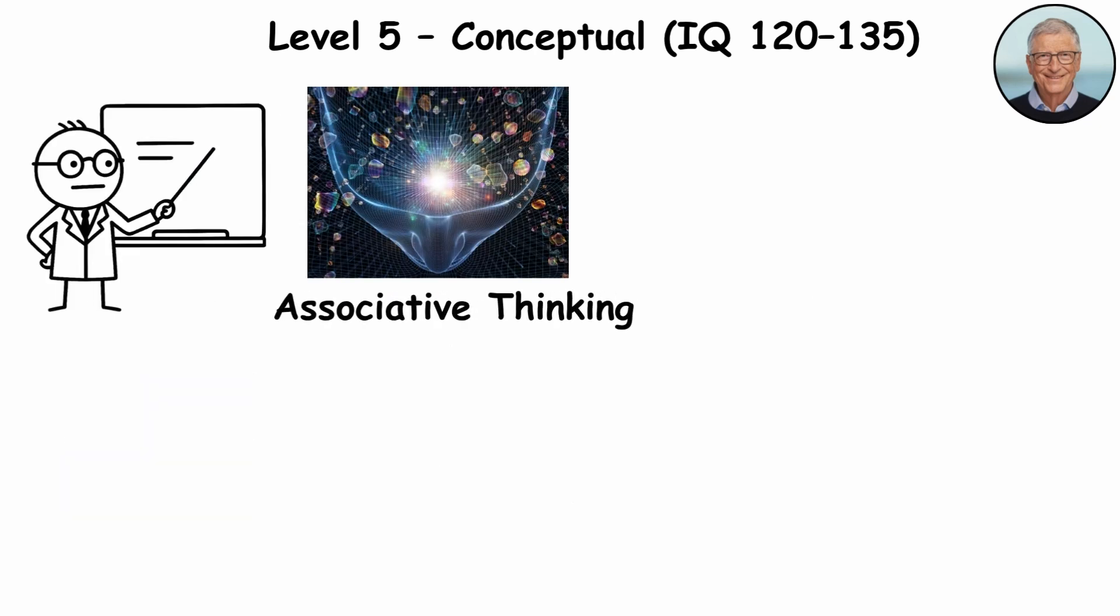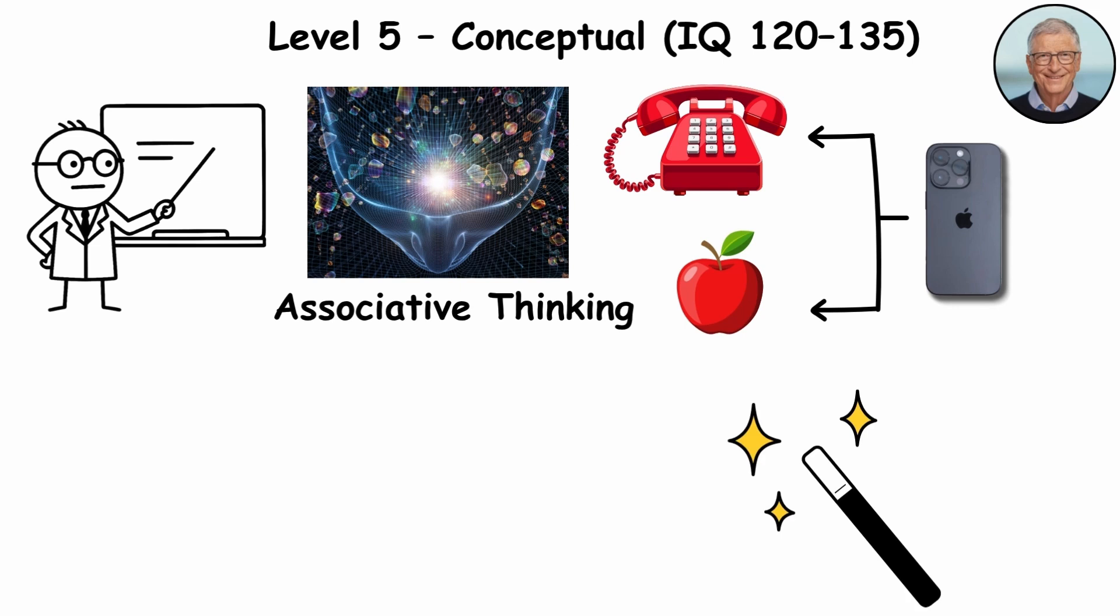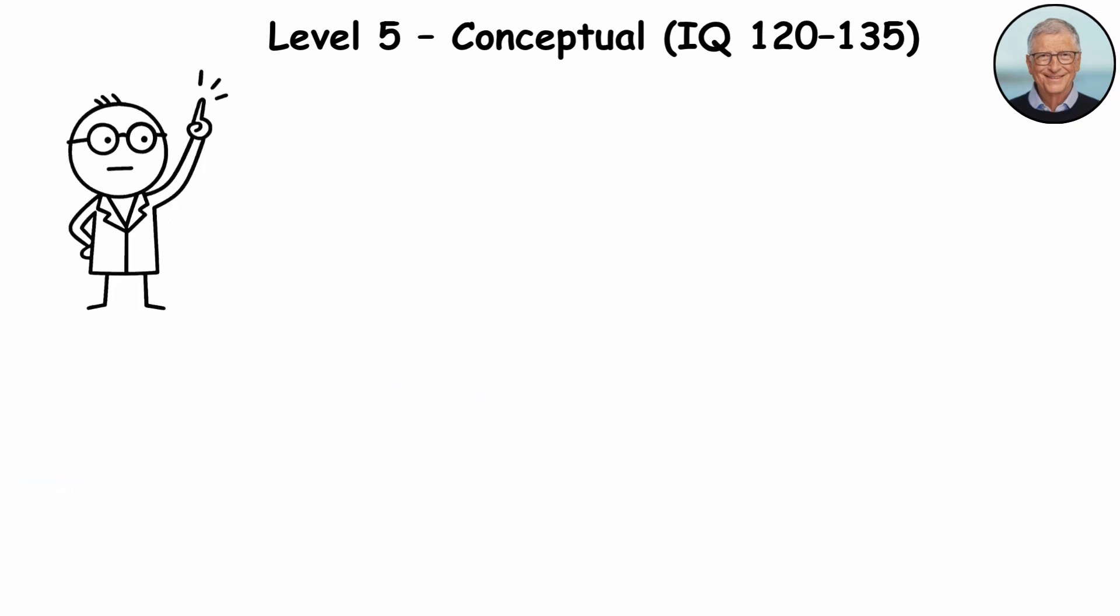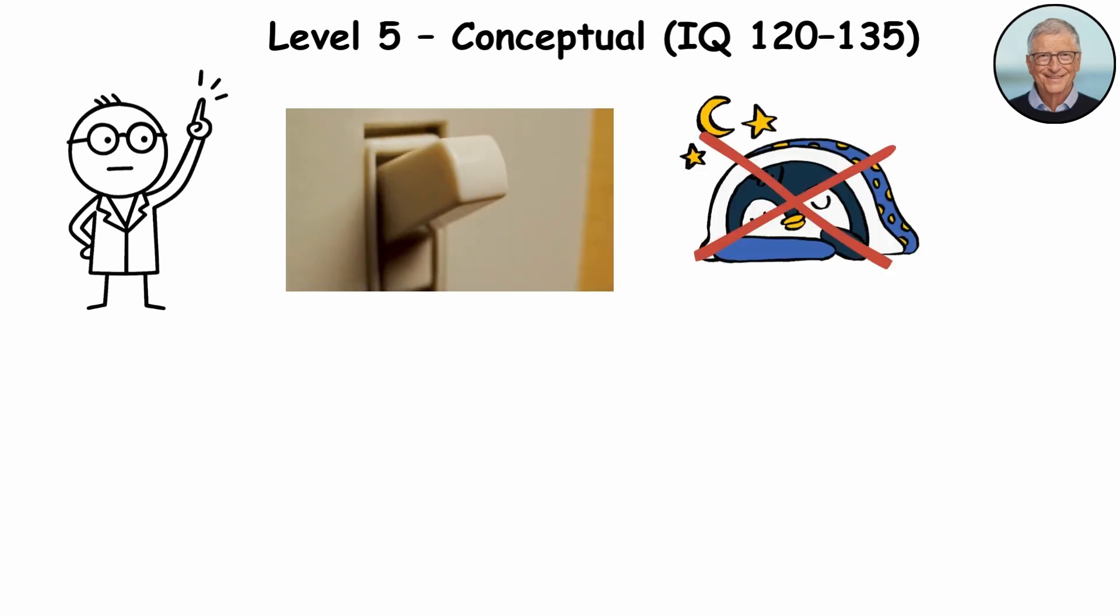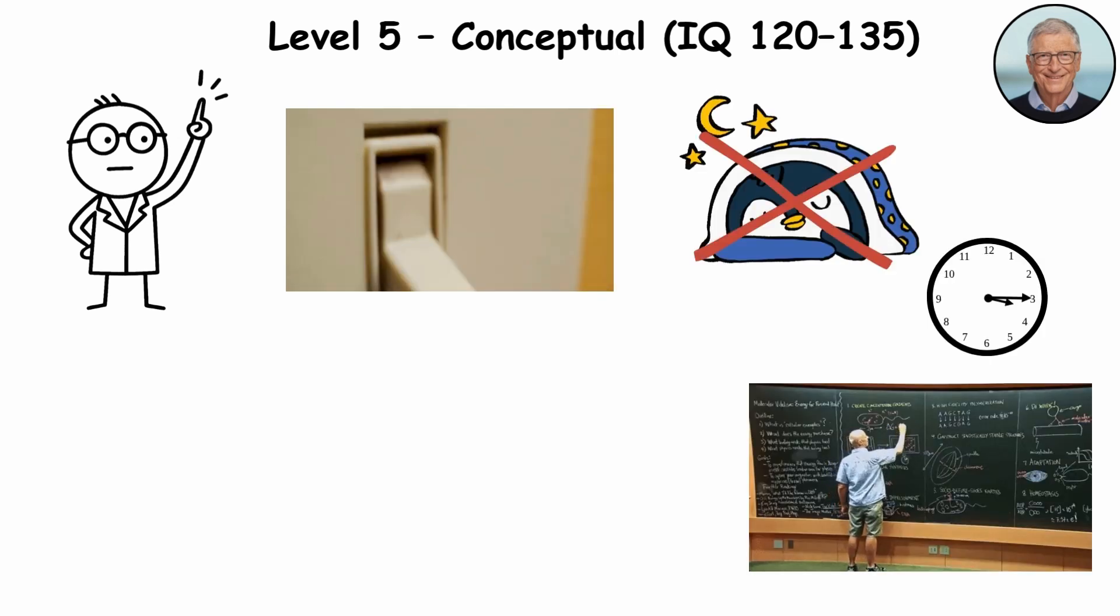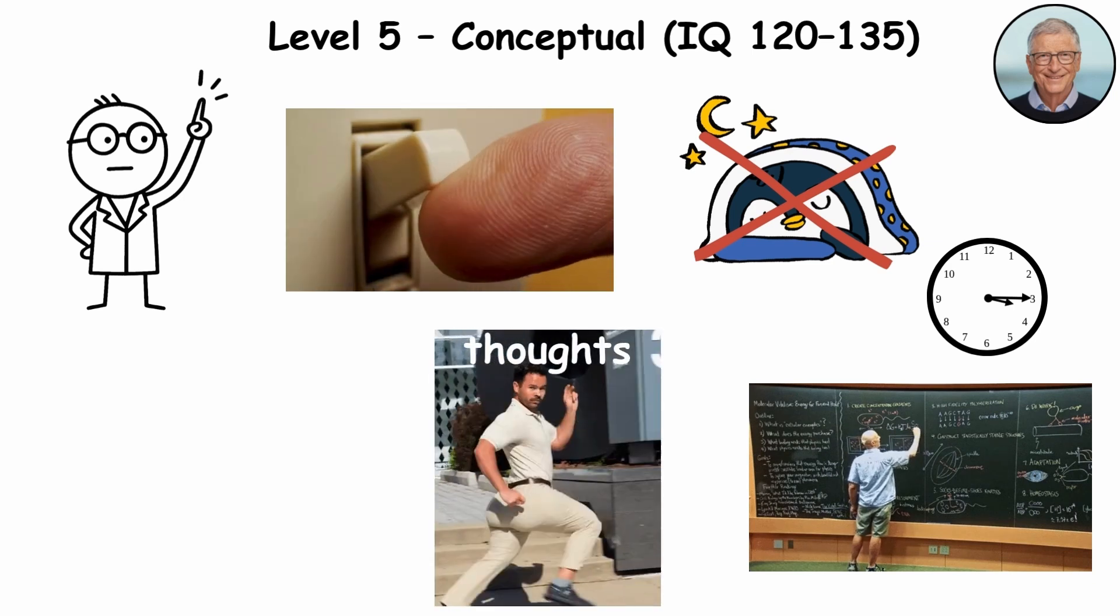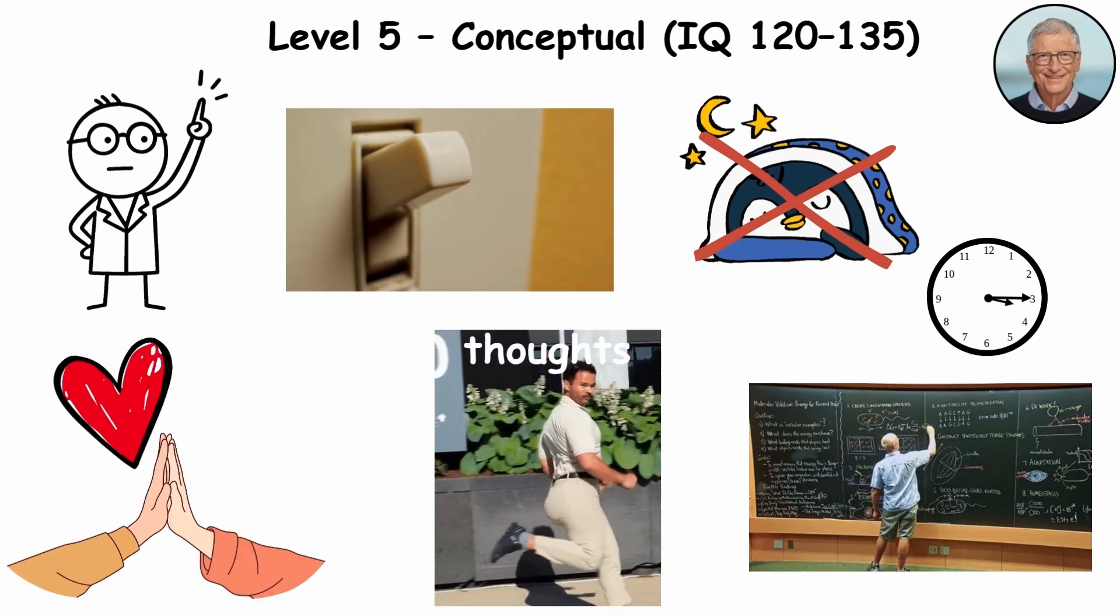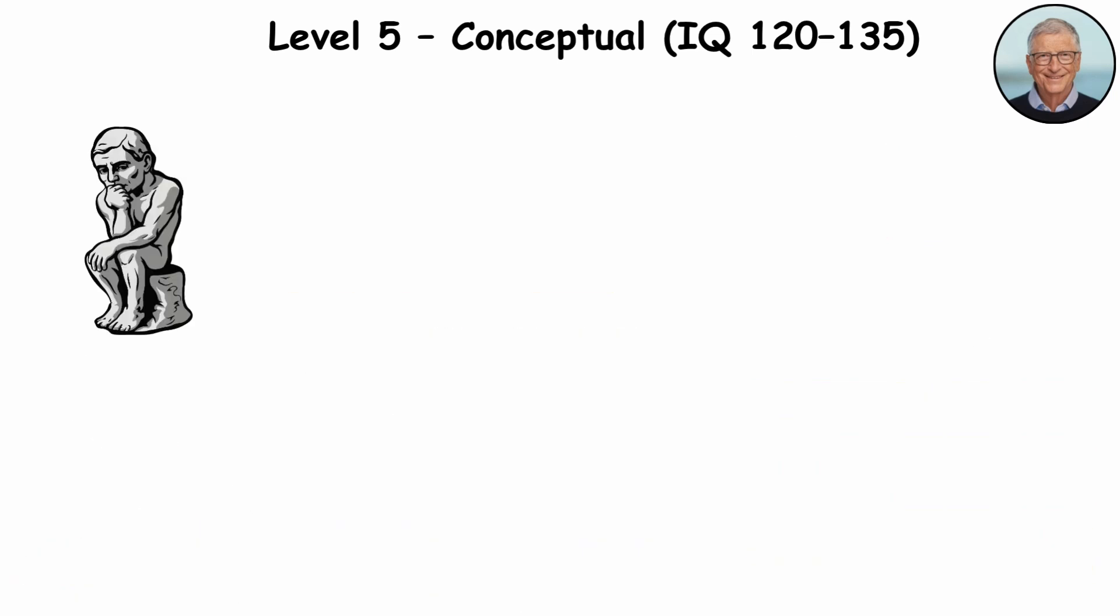Neuroscientists call this associative thinking when distant ideas fuse into new ones. It's the mental magic trick behind every invention, from the light bulb to AI. The trade-off? Their minds never really shut off. Sleep feels optional when your brain's brainstorming new physics at 3am. And when your thoughts sprint ahead, emotions and relationships can lag behind. Conceptual thinkers don't just connect dots. They start inventing new constellations.